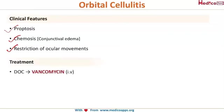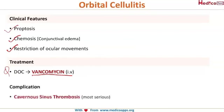The drug of choice for orbital cellulitis is intravenous vancomycin. One of the most disastrous complications of this condition is cavernous sinus thrombosis, which is a very fatal condition.